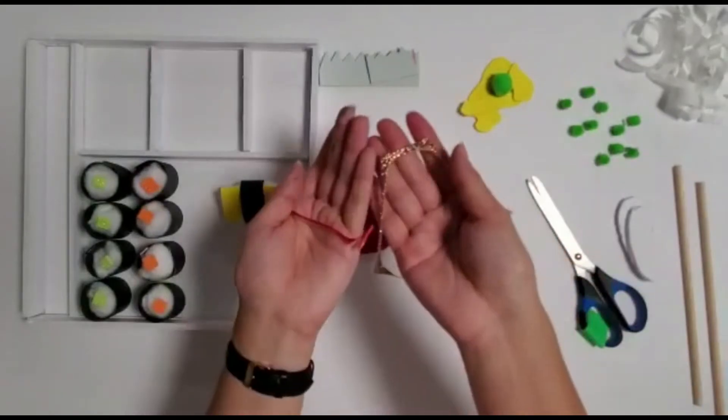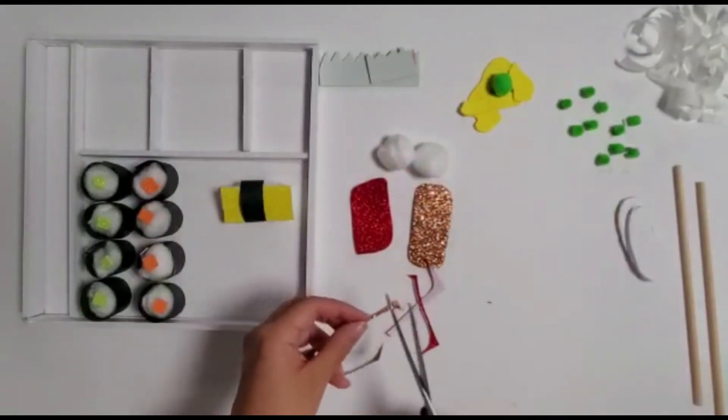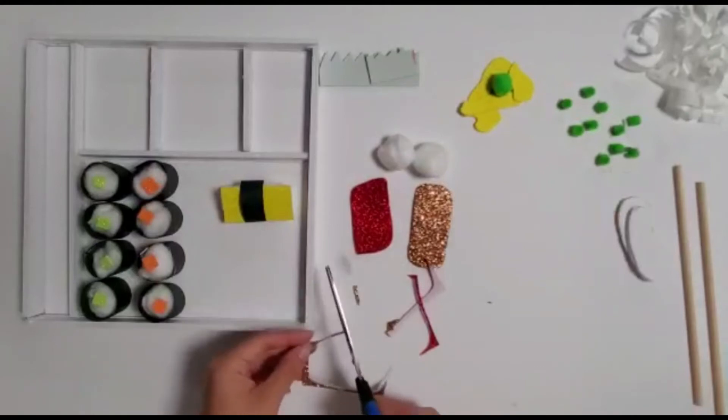With the scraps of glitter foam, cut small strips to stick onto the larger rectangles.